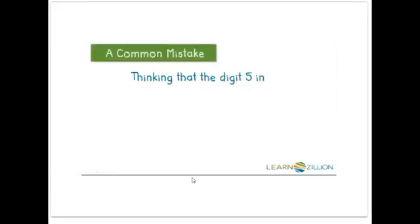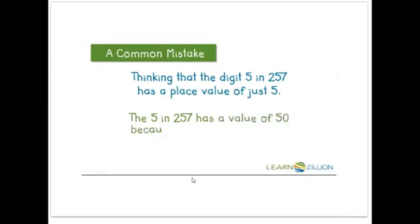A common mistake that many students make is thinking that the digit 5 in 257 has a place value of just 5. The 5 in 257 has a value of 50 because it is in the tens place.